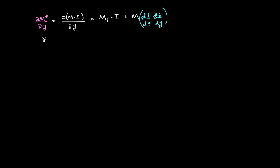The first part of our relationship involves solving the partial derivative of M* with respect to y. This partial derivative is d/dy of M times i. We use the product rule to get that the partial derivative of M* equals the partial derivative of M with respect to y multiplied by i, plus M multiplied by the partial derivative of i with respect to y.